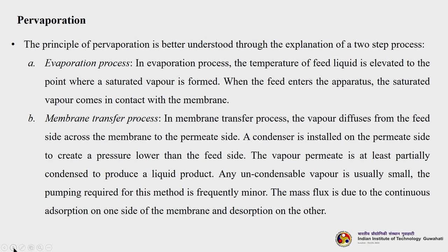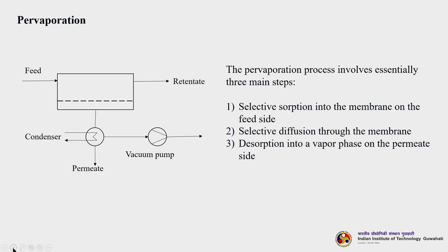A condenser is installed on the permeate side to create a pressure lower than the feed side. The vapor permeate is at least partially condensed to produce a liquid product. The mass flux is due to the continuous adsorption on one side of the membrane and desorption on the other side. Pervaporation essentially involves three main steps: first, selective absorption into the membrane on the feed side; second, selective diffusion through the membrane; and third, desorption into a vapor phase on the permeate side.